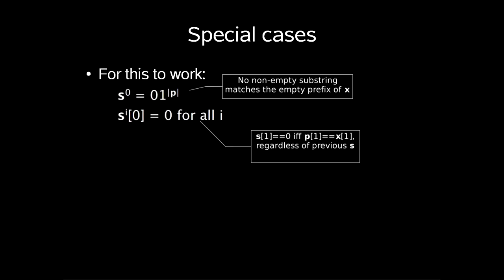Index 0 of s^i must be 0 for all i, so index 1 of s is 0 if and only if index 1 of p matches index 1 of x, regardless of the previous s.